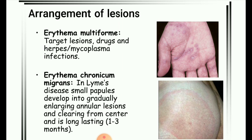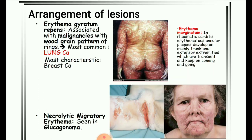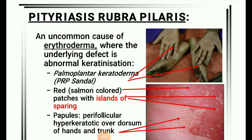Next image: Arrangement of lesions — erythema multiforme and erythema chronicum migrans. Erythema multiforme presents as target lesions, associated with drugs, herpes, and Mycoplasma infections. Erythema chronicum migrans in Lyme's disease: small papules develop into gradually enlarging annular lesions, clearing from the center, and are long-lasting — one to three months. Erythema gyratum repens is associated with malignancies showing a wood-grain pattern of rings, most commonly with lung carcinoma and most characteristically with breast carcinoma.